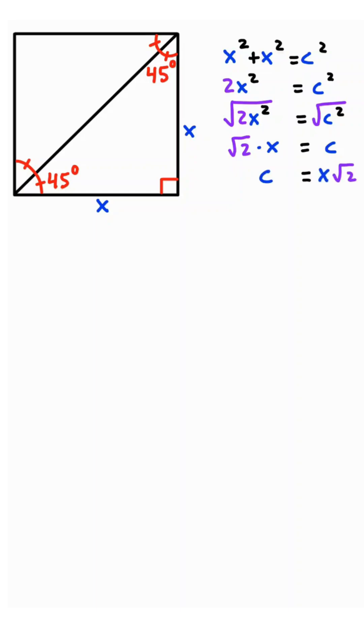Therefore, c is equal to x root 2, which is the hypotenuse. If we focus on the angles, the three angles are 45, 45, and 90 degrees for this triangle. In terms of the sides, we have the leg to be x, another leg to be x, and the hypotenuse to be x root 2.